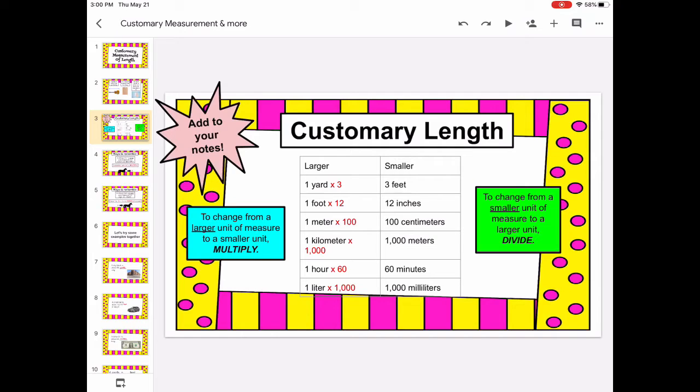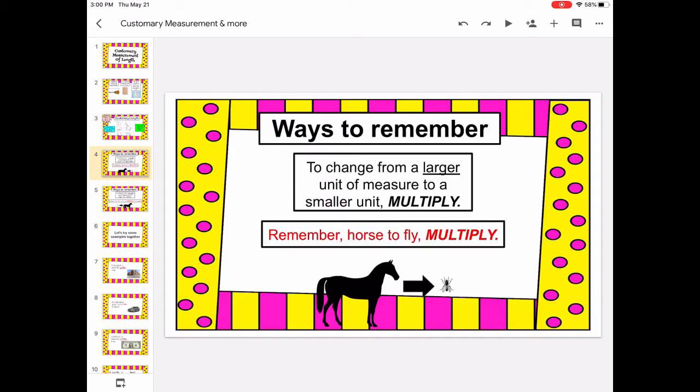Now there are some simple phrases to help remind you. To change from a larger unit of measure to a smaller unit you multiply. Remember a larger unit like a horse to a small unit like a fly you multiply. So horse to fly, large to small, multiply.